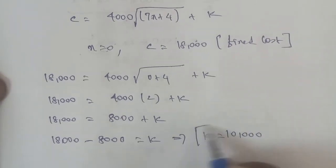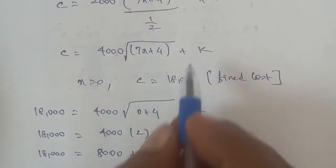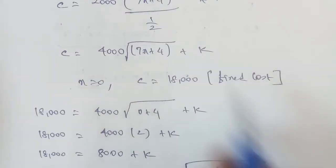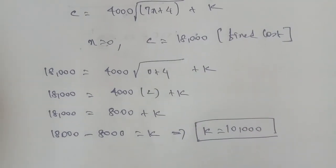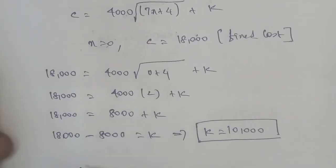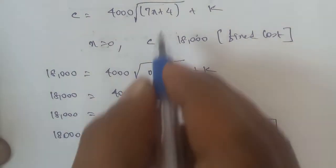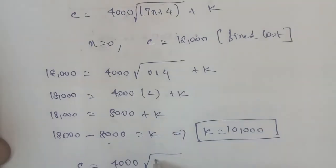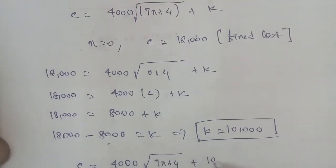So the value of k is 10,000. Now entering back into the cost function: therefore C is equal to 4,000 times square root of (7x plus 4), plus k, where k is 10,000.